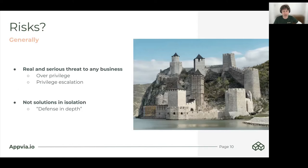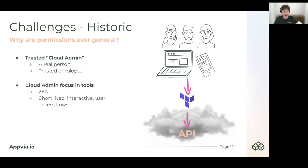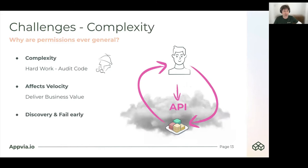So, challenges. Historically, they used to be real people, trusted employees, and the tools focused around that with two-factor authentication and short-lived, interactive user flows. This isn't really applicable these days with Crossplane and resource reconciliation without a person directly in the loop at the time of provisioning. There are also challenges around complexity — it's hard work to audit the code of any provisioning tool, including Crossplane. This affects velocity, our ability to deliver business value quickly, and we want to be able to discover and fail early.